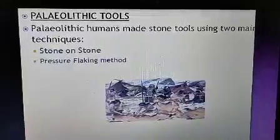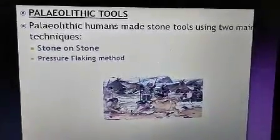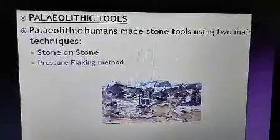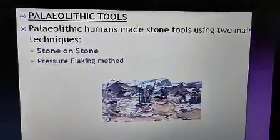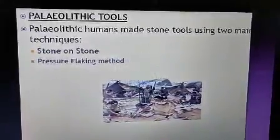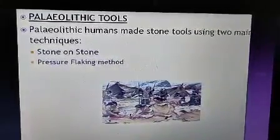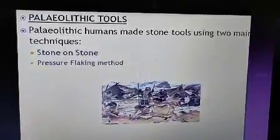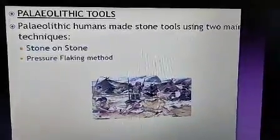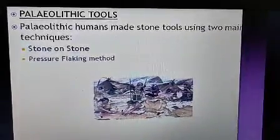In the pressure flaking method, the core stone was placed on a firm surface and the hammer stone was placed on a bone or stone resting on the core stone. Flakes were removed from the core stone in this manner and shaped into tools. That is all for part 2 of the early humans chapter. Thank you.